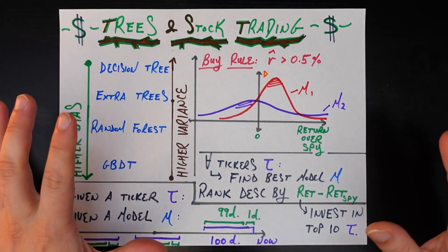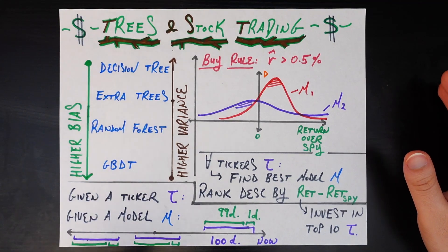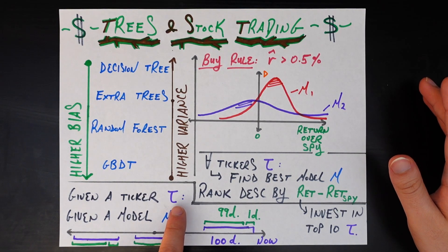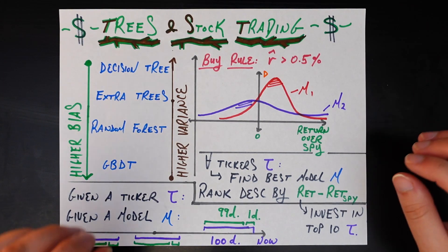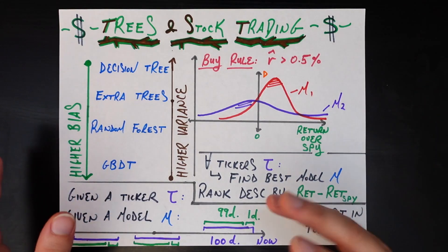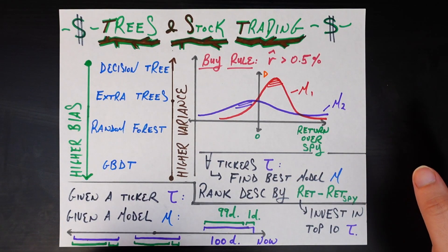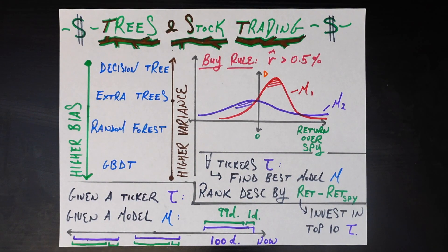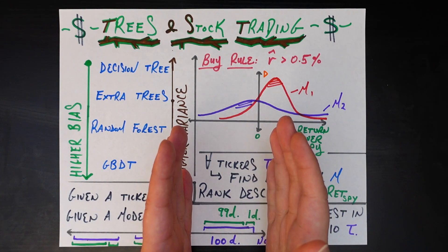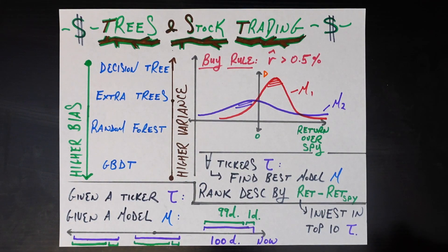Now I'm going to outline the methodology clearly. Given some ticker T — say Microsoft stock — and given some model M from this set including linear regression, here's how we evaluate if that model is good or bad at predicting the next day's return. We create a window that looks back in time. Here's today at 'now,' and we're rolling a hundred-day window backwards, one day at a time.